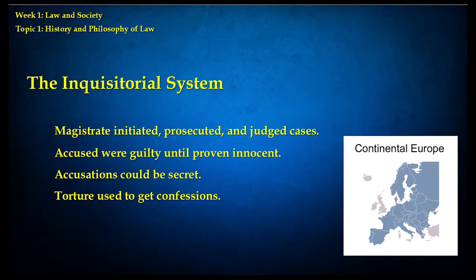In this system, the accused were guilty until proven innocent, which is the opposite of the system in modern America. People had to prove they were innocent of the crime they were accused of. And they could have a lot of trouble doing this because they didn't always know what they were being accused of — accusations could be secret. There was no right to know what you were being accused of or who was accusing you.